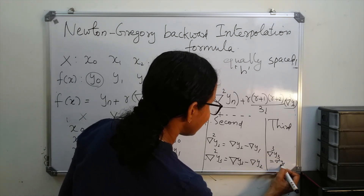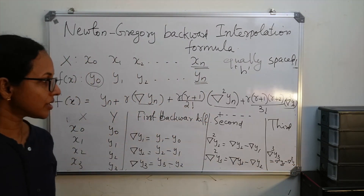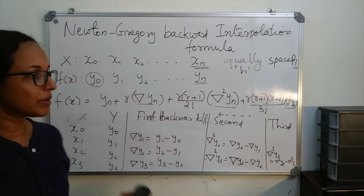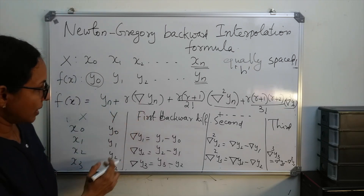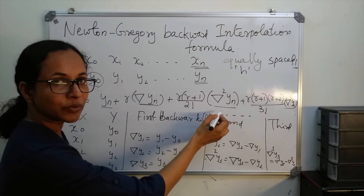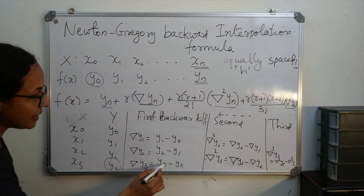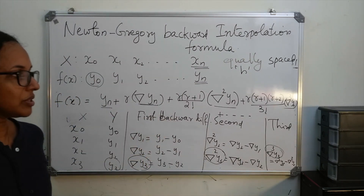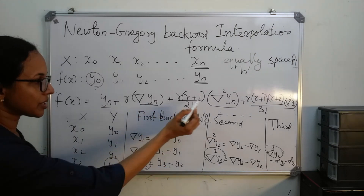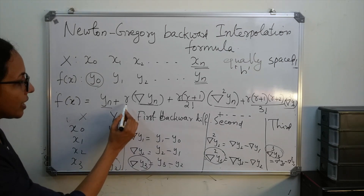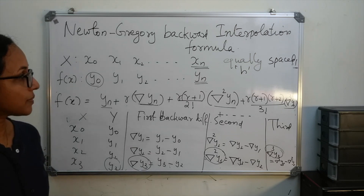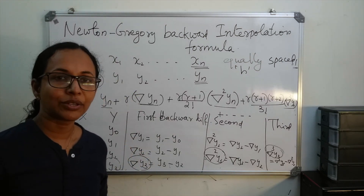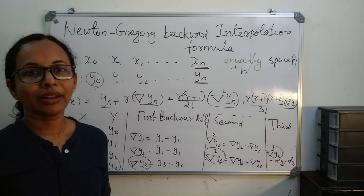Now, in both backward and forward interpolation, the difference table is the same — only the notation is different. In the backward formula, we need yn, backward delta yn, backward delta squared yn, and so on — that is, the last terms in each column. So after completing the table, substitute those last terms, and calculate r using r = (x minus xn)/h. Always remember: Newton-Gregory backward and forward formulas can be used only if x values are equally spaced.